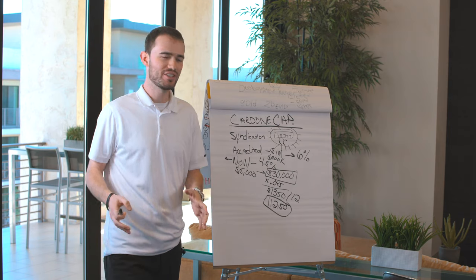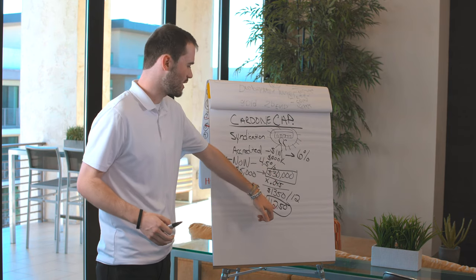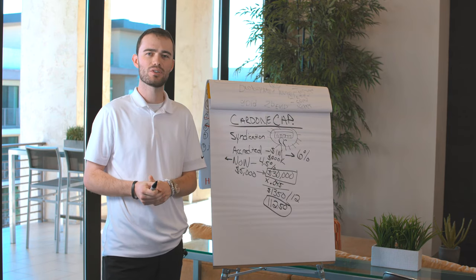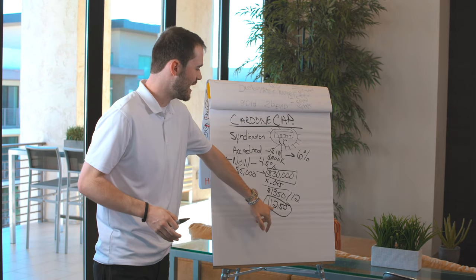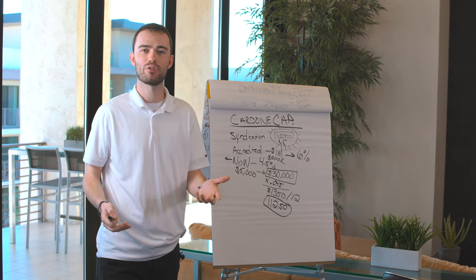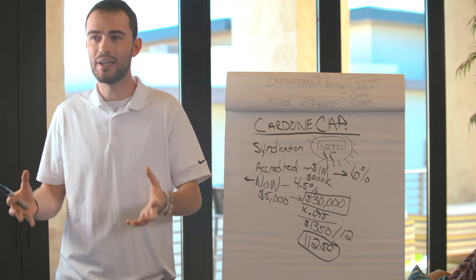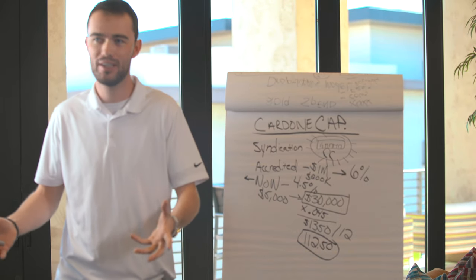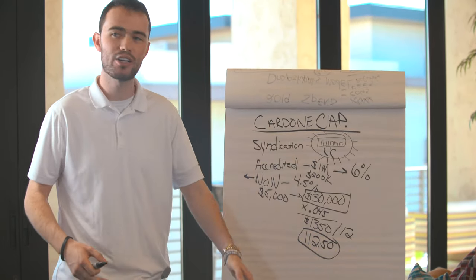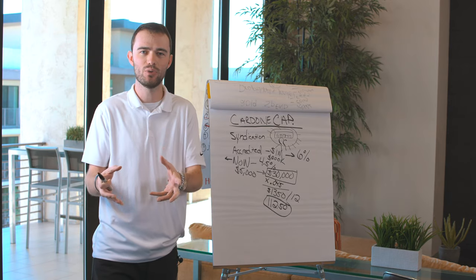Now, before you get discouraged and say, wow, I put in $30,000 and I'm only going to be making $112.50, what you have to remember is that this is cashflow. What is that cashflow from? Well, that cashflow is from like a place like I live, an apartment building. And so this is from people that are actually renting out your piece of the pie, if you will.